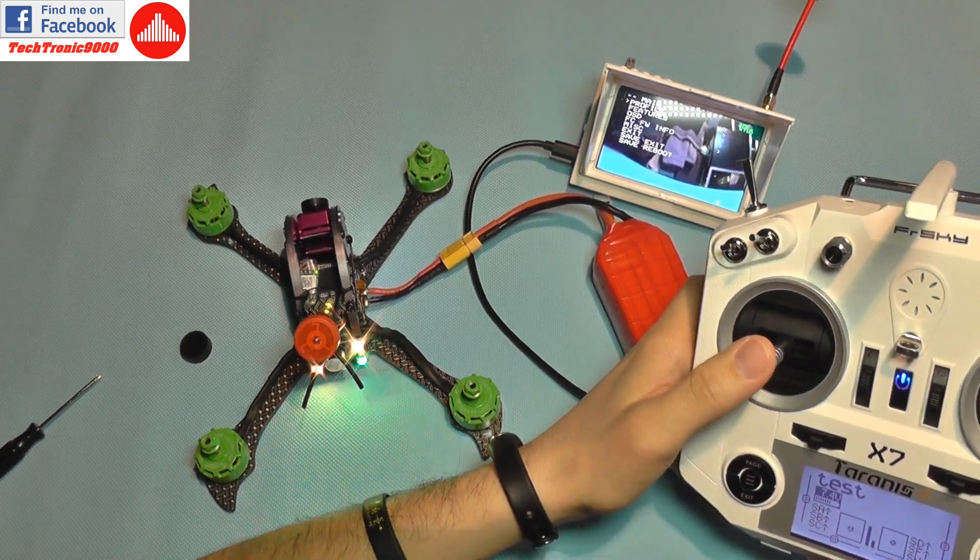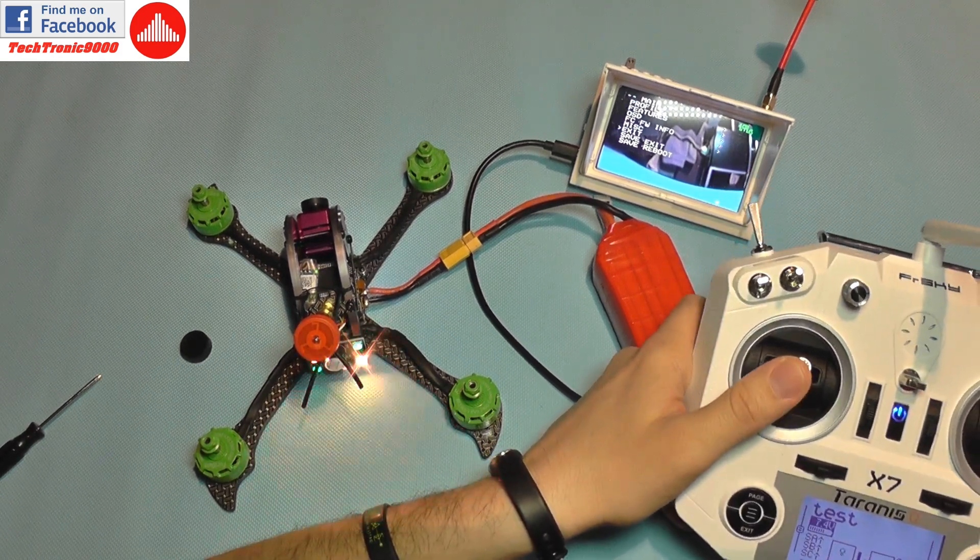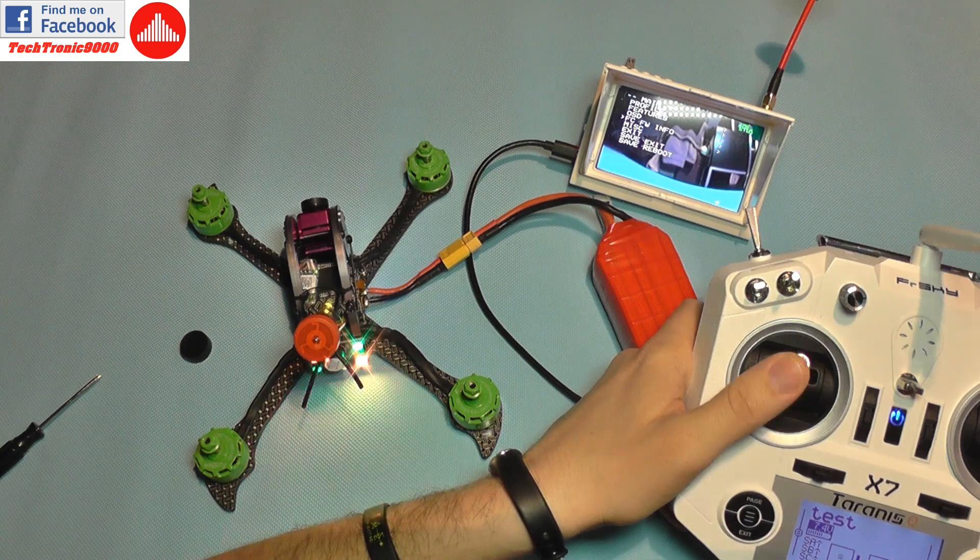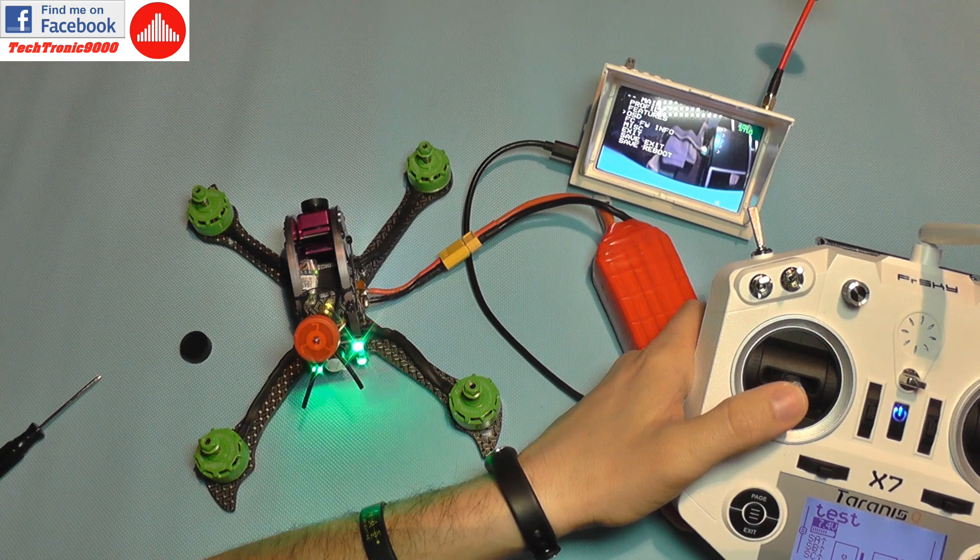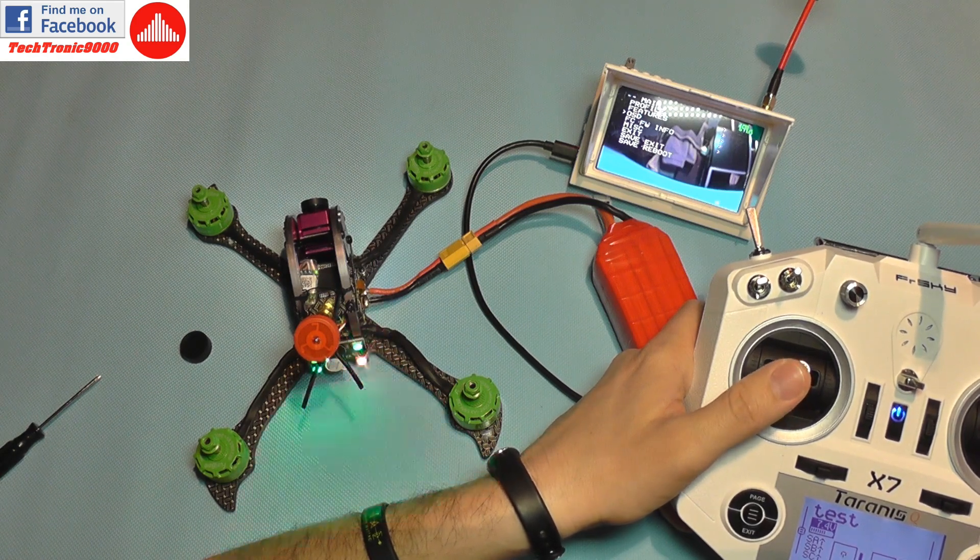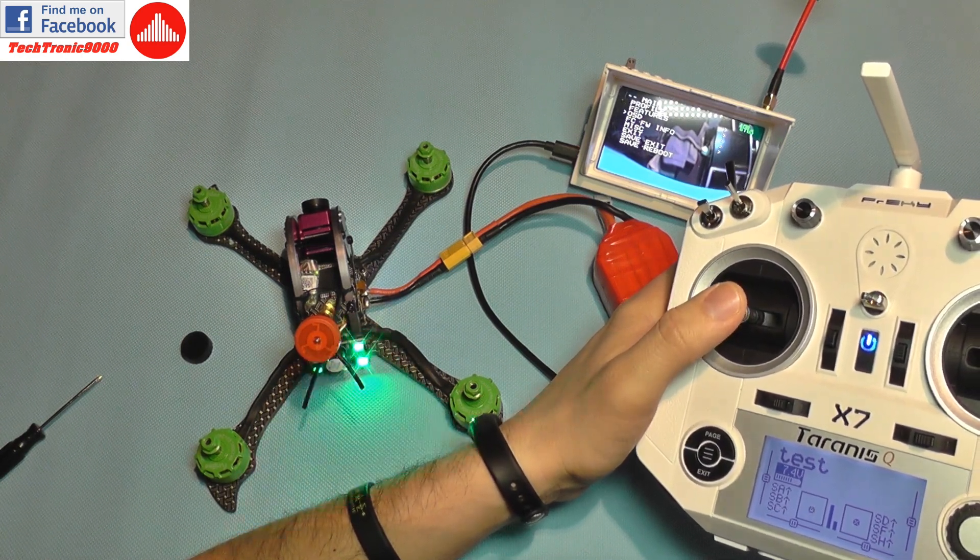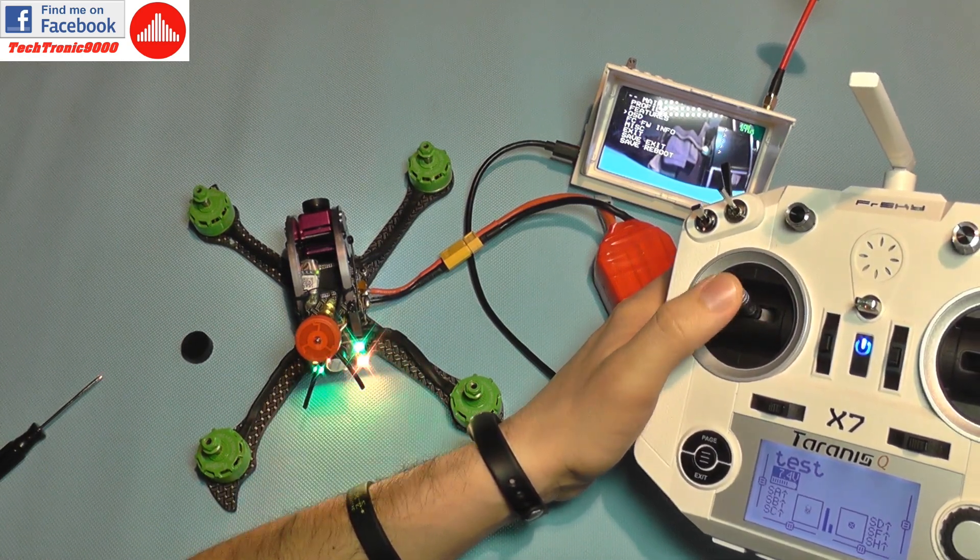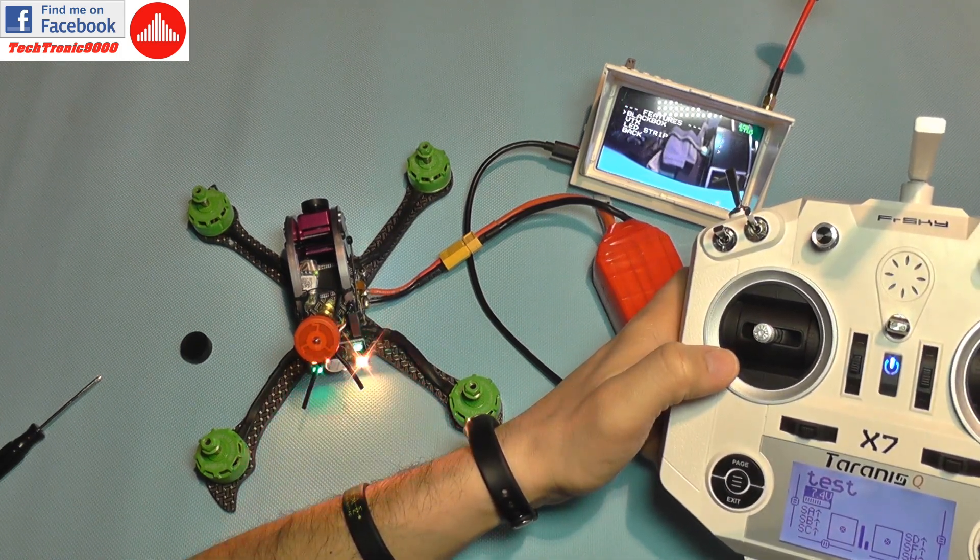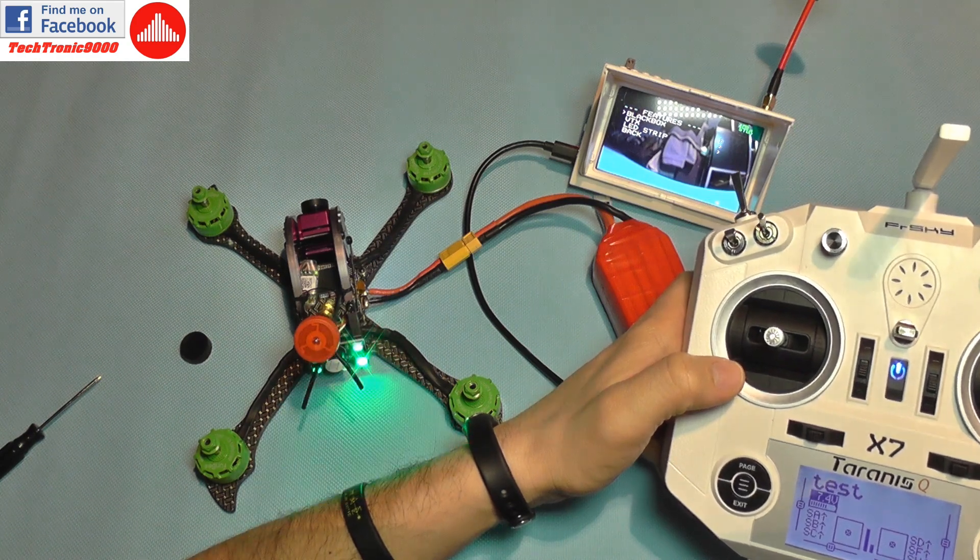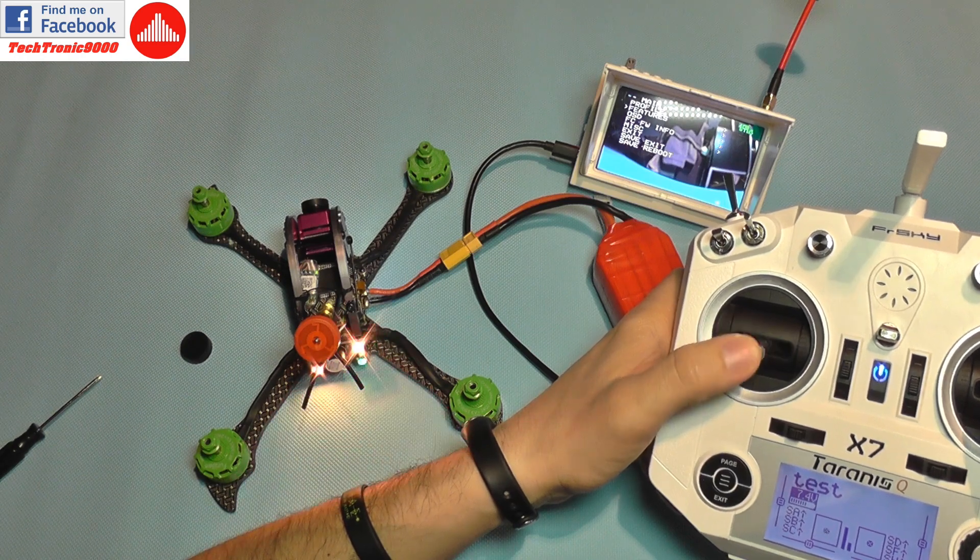So I need to figure things out. I don't know if we can do something about the camera from here. Let's see features. Also the throttle is the up and down so all the commands are not as they should be. Blackbox, VTX, LED strip. I don't think I can operate it with commands like that.